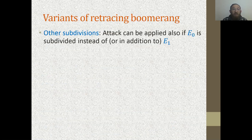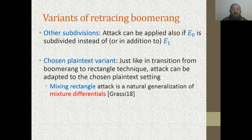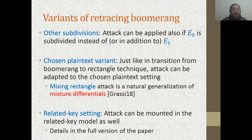There are other variants of the Retracing Boomerang described in the paper. First, we can have other subdivisions, like subdividing also E0 to get four subciphers. We also have a chosen-plaintext variant: just as the classical boomerang technique was transformed into the rectangle technique, here we can adapt the attack to the chosen-plaintext setting, getting the shifting and mixing rectangle attacks. The mixing rectangle is a natural generalization of the mixture differentials of Grassi, which do the same trick in the specific case of five-round AES. The attack can also be mounted in the related-key setting.